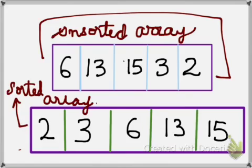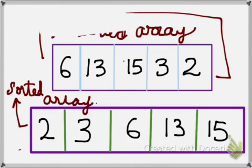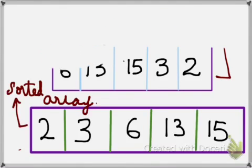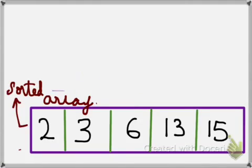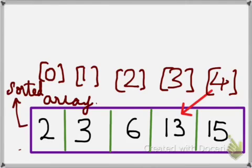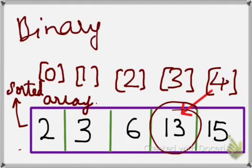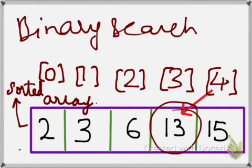Let us see how to search for an element using the binary search technique. Let us consider the sorted array 2, 3, 6, 13, and 15 as it is in the bottom of the page. Using the binary search technique, let us find out where the element 13 is. The element 13 is in the third position. So we have to search for the element 13 using binary search. Don't get confused. This arrow mark is just an indication that we are searching for 13.